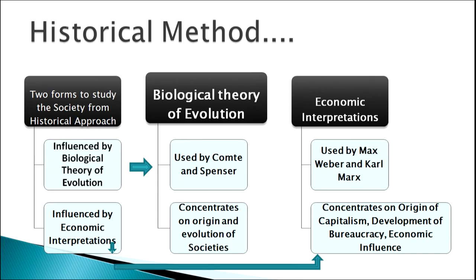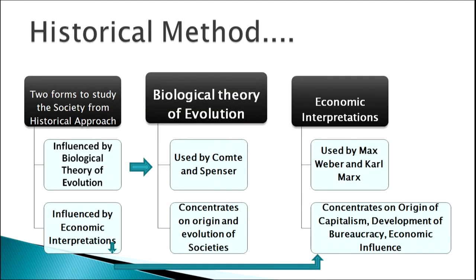Two forms to study the society from the historical approach are very important. The first is influenced by the biological theory of evolution, and the second is through the economic interpretation of history. When we study the historical method through the biological theory, we look at how society evolved. This concept was first used by Max Weber and Karl Marx, and this method concentrates on the origin and evolution of societies.